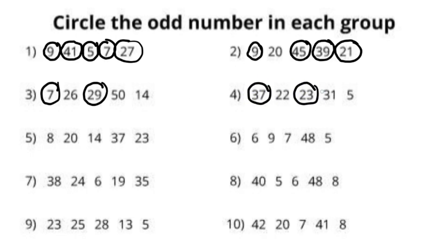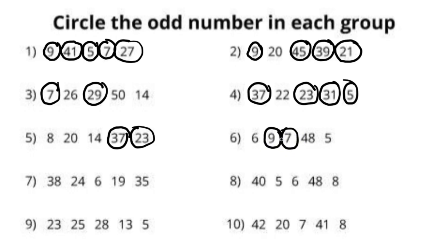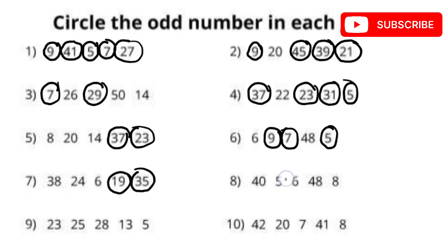We have to look at the digit in the unit place to determine whether a number is even or odd. If the unit place digit is an even number, the whole number is even. If the unit place digit is an odd number, the whole number is odd. In question number 7, 19 and 35 are odd numbers. In question number 8, 5 is an odd number. In question number 9, 23, 25, 13, and 5 are odd numbers.